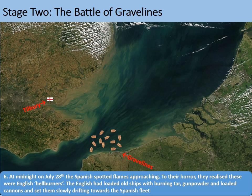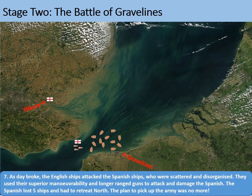The attack of the fire ships is one of the most important and famous parts of the entire battle. As day broke, the English ships attacked the scattered and disorganized Spanish, using their superior manoeuvrability and longer-range guns. The Spanish lost five ships and had to retreat north. After what we now call the Battle of Gravelines, the plan to pick up the army was no more. Indicate the English attack on your map and note down event number seven.